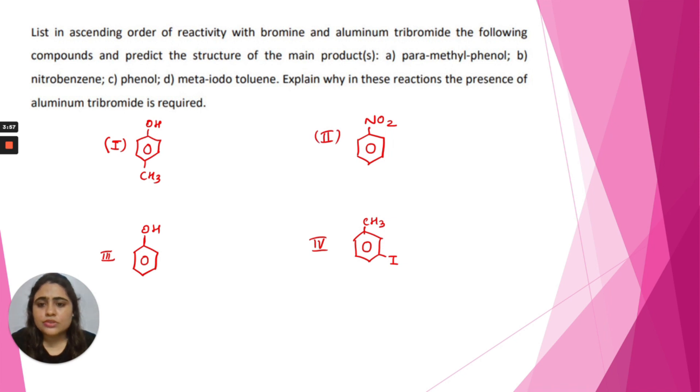Now we need to list the order of reactivity with bromine and aluminum bromide. Aluminum bromide is a Lewis acid. Its octet is incomplete - only six electrons are there. If you see the structure of aluminum bromide, this is the structure of aluminum.